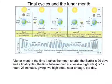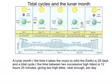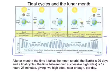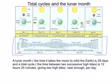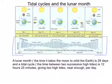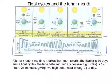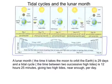Here you can see a diagram of the tidal cycles and the lunar month. We have two types of tides: spring tides and neap tides. Spring tides have the highest tidal range and neap tides have the smallest tidal range, occurring over the lunar month — the time it takes the moon to orbit the earth, which is 29 days. The tidal cycle is the time between two successive high tides, which works out at about 12 hours and 25 minutes, so we get approximately two high tides a day.